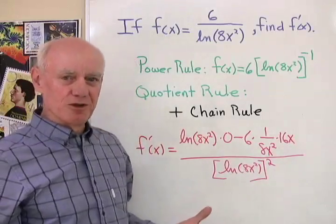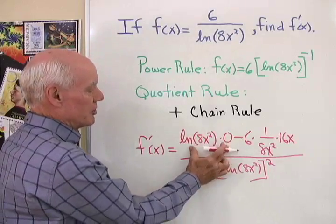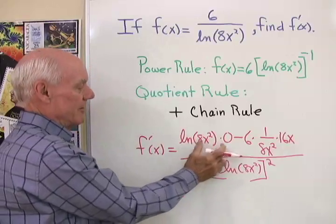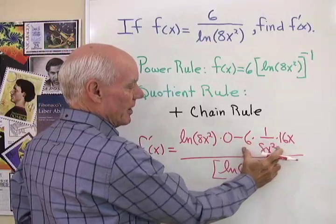So there's your derivative using the quotient rule. Let's simplify it. This first term will be 0 because whatever I have here times 0 is 0, minus this quantity right here.